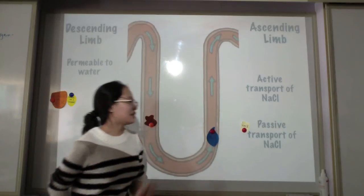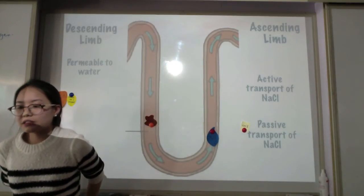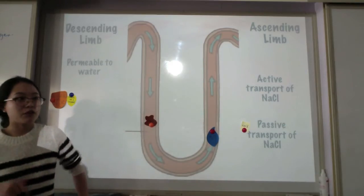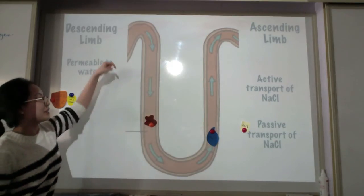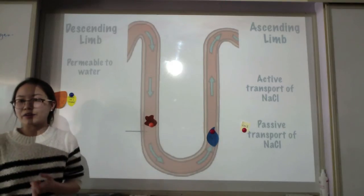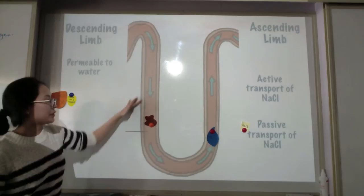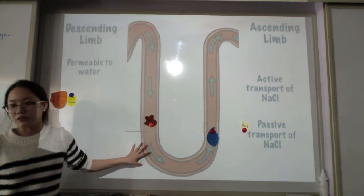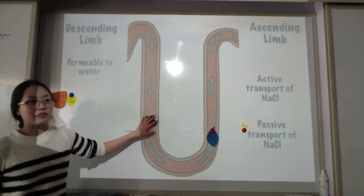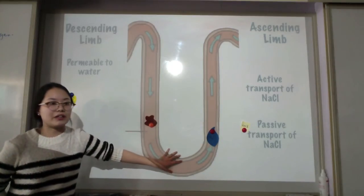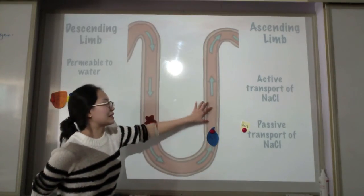So NaCl will be absorbed. And also we can call this the counter current system which is that there's a flow of fluid in opposite directions as you can see it goes down and up. And also it's a counter current multiplier which is saying that as you go steeper into the medulla there is a steeper gradient of concentration of NaCl. So it will be like the highest concentration of NaCl here and it will be less as you go up.